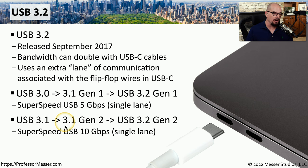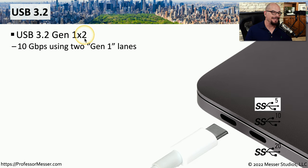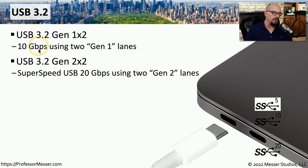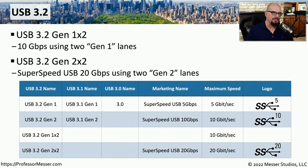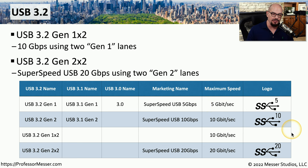USB 3.1, which we were calling USB 3.1 Gen 2, is now called USB 3.2 Gen 2 and supports exactly the same speeds of throughput. USB 3.2 Gen 1x2 effectively uses twice the number of Gen 1 lanes to provide 10 gigabits per second. There's also USB 3.2 Gen 2x2, where the 10 gigabit per second throughput is doubled with an additional lane, giving a maximum of 20 gigabits per second. A summary chart lists all of the USB 3.0, 3.1, and 3.2 standards with their old and new names, speeds, and logos.